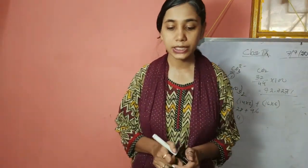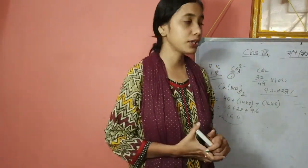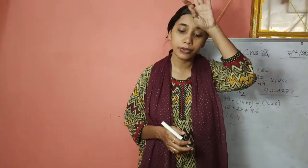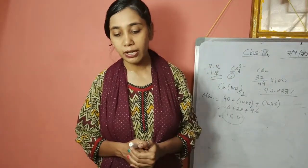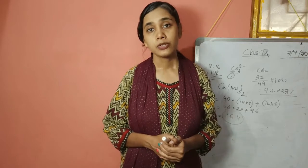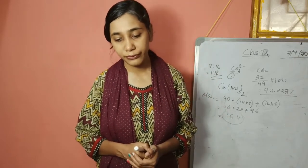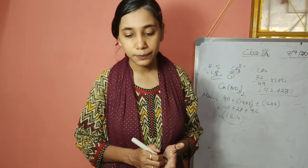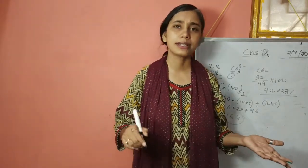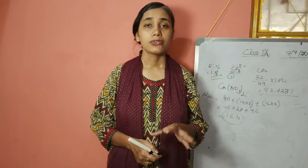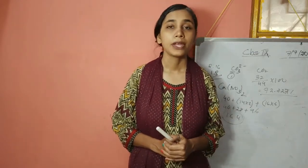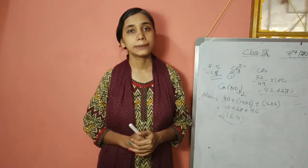The third numerical was the percentage of water in blue vitriol, which is CuSO₄·5H₂O. Calculate the molecular weight — it comes to 248.5 — and the water molecule mass is 90. So percentage = (90 ÷ 248.5) × 100 = 36.217, which you can also write as 36.22. Write only the answer; do your calculation on the paper. That's all about the answers.